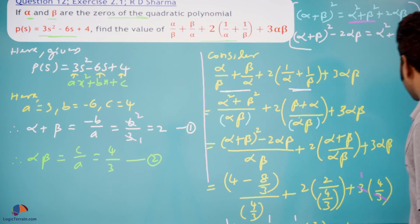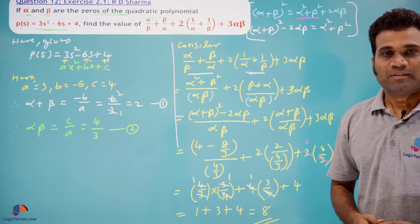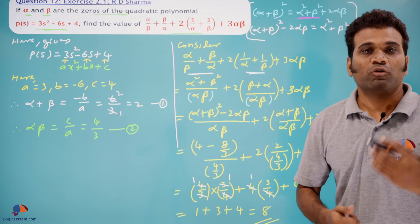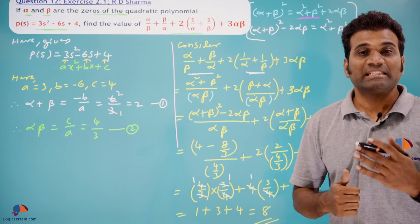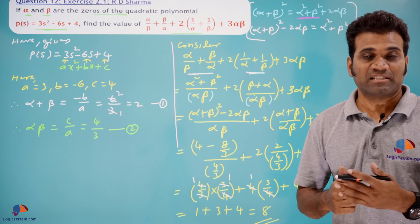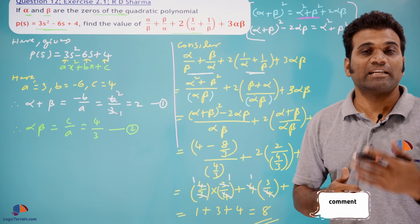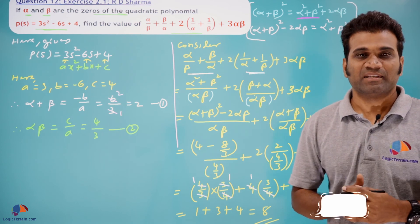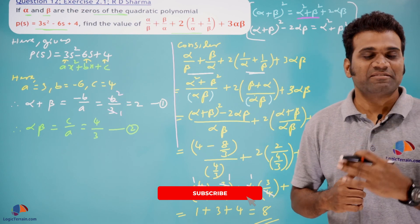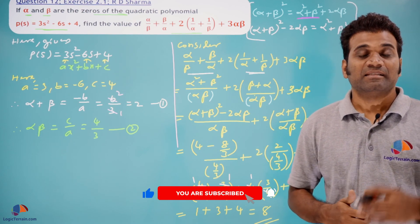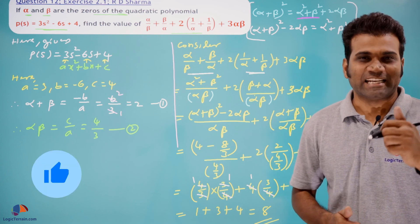Therefore, the required expression value, when alpha and beta are zeros of this quadratic polynomial, is 8. I hope that is very much clear. If you have further doubts, please write your queries and requests in the comment section below — I'll be waiting to read all your comments and I'll reply. That's it for today's session. See you in the next session with an amazing video. Till then, keep learning, be safe, and have a great day.